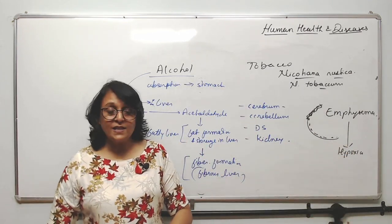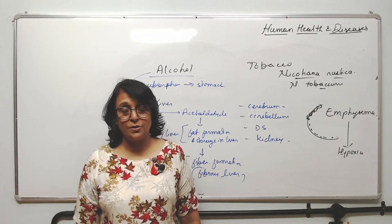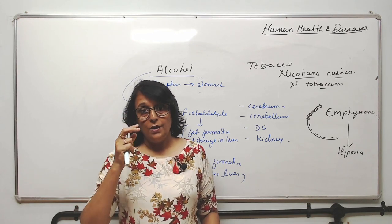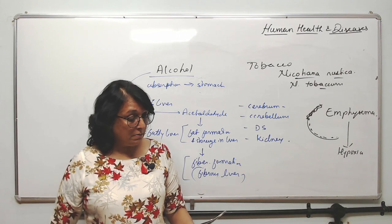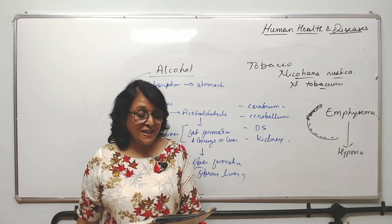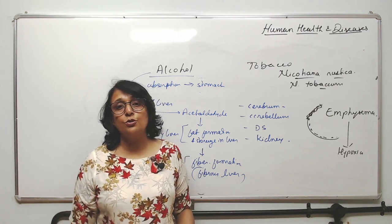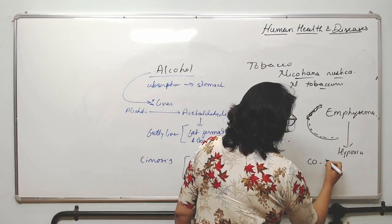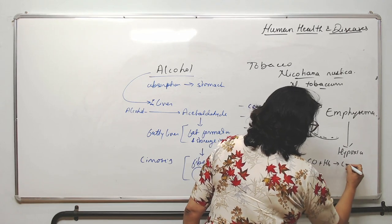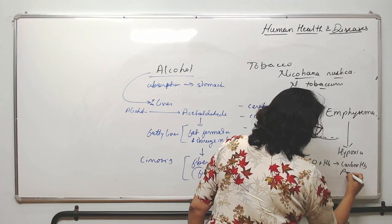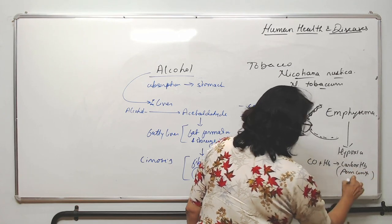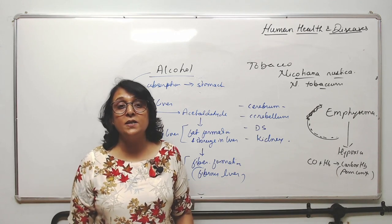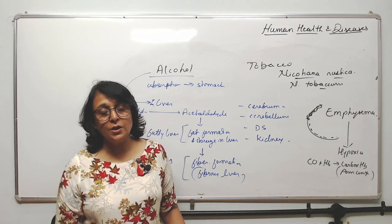If the brain gets less oxygen, it is dangerous because brain cells are very sensitive to oxygen. Smoke also contains nicotine, benzopyrene, and carbon monoxide. Carbon monoxide combines with hemoglobin to form carboxyhemoglobin, which is a permanent complex — meaning that hemoglobin is permanently removed. This is known as carbon monoxide poisoning, which can lead to suffocation and death.